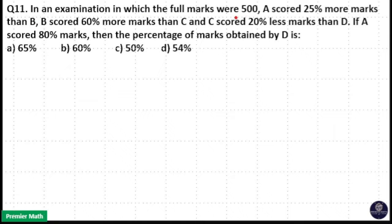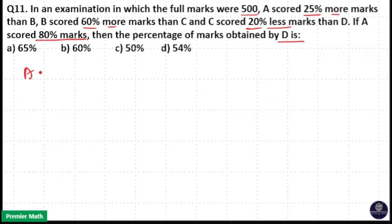In an examination in which the full marks were 500, A scored 25% more marks than B, B scored 60% more marks than C, C scored 20% less marks than D. If A scored 80% marks, then the percentage of marks obtained by D is.